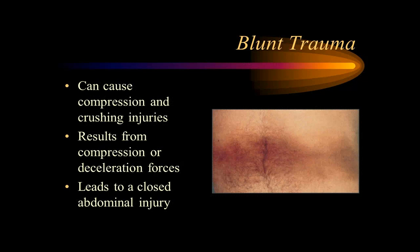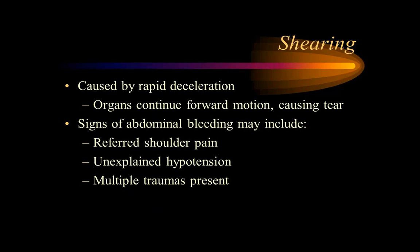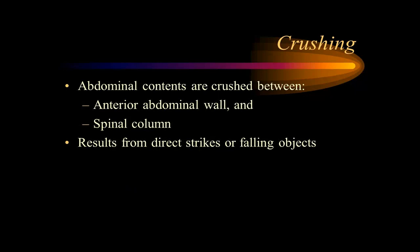Blunt abdominal trauma includes crush injuries, compression injuries, and deceleration forces. Shear injuries occur from rapid deceleration — organs continue moving forward while tethered structures get pulled apart, including ligaments and the aorta. The aorta is particularly vulnerable because it is tethered and cannot move, leading to aortic rupture. Findings include abdominal bleeding and shoulder pain from diaphragmatic irritation.